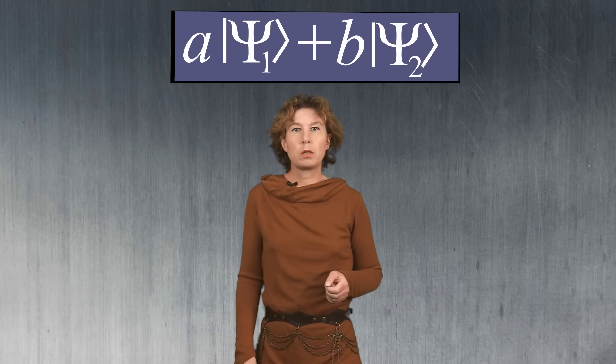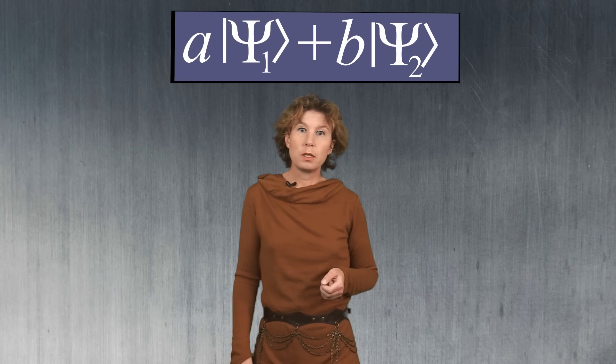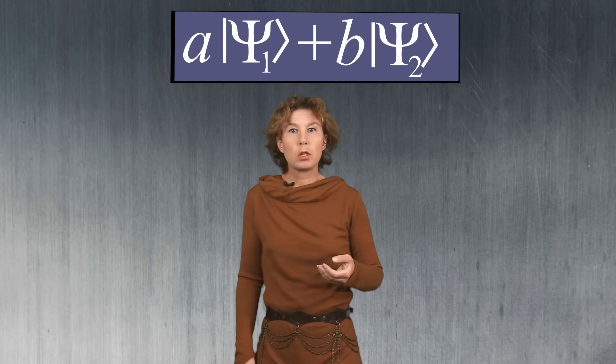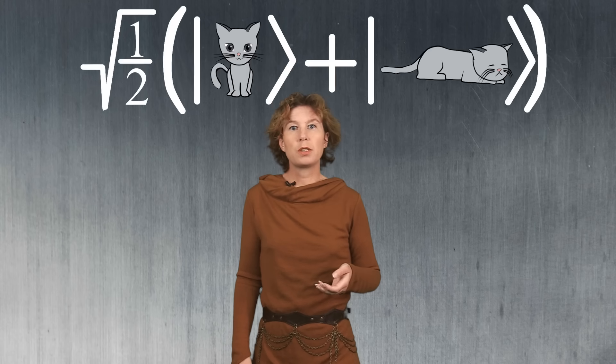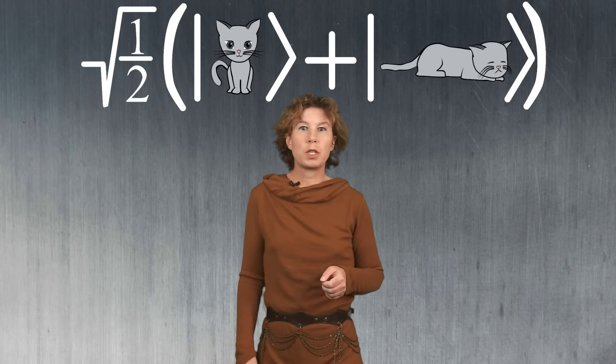But it is relevant because this means if you have two solutions of the Schrödinger equation that have a correspondence in reality, then you can also make superpositions of them, and the superpositions should also have a correspondence in reality. This is where the idea comes from that if the cat can be dead and the cat can be alive, then the cat can also be in a superposition of dead and alive. Some people interpret such a superposition to mean that the cat is neither dead nor alive, but somehow both until you measure it. Personally, I'm an instrumentalist and I don't assign any particular meaning to such a superposition — it's merely a mathematical tool to make a prediction for a measurement outcome.